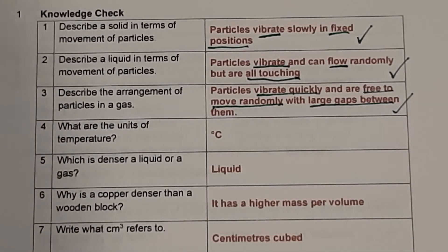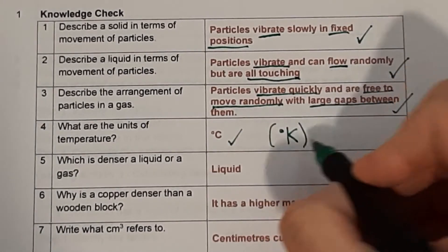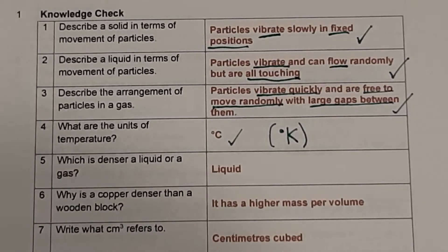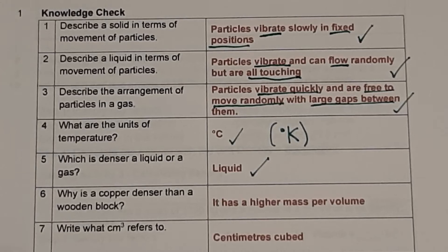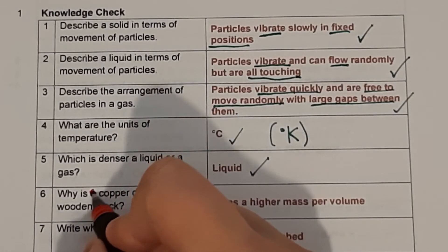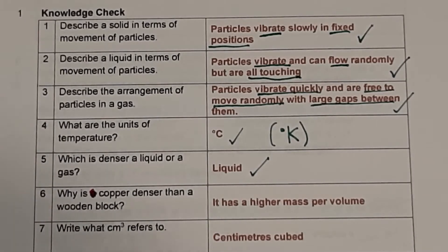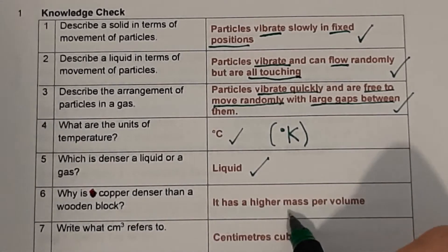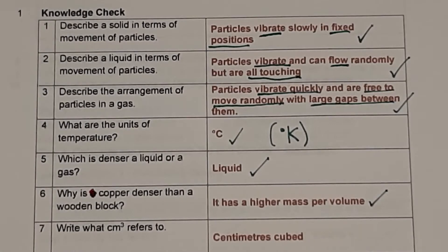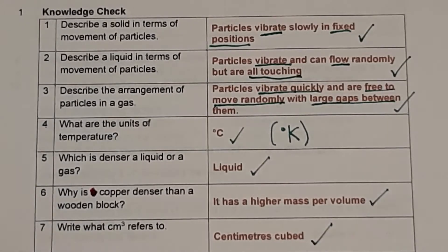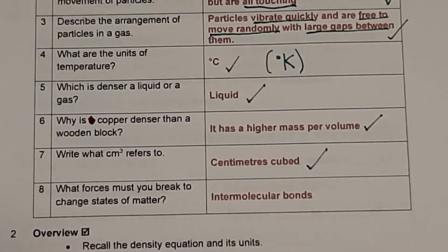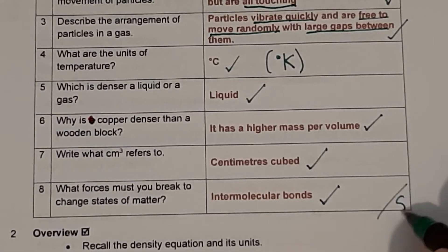Question four: what are the units of temperature? That's degrees Celsius — sometimes degrees Kelvin, but degrees Celsius is the preferred option for this module. Question five: which is denser, a liquid or a gas? Liquids are denser than gases, but solids are denser than both. Question six: why is copper denser than a wooden block? Because it has a higher mass per volume. Question seven: write what cm³ refers to — centimetres cubed. Question eight: what forces must you break to change states of matter? Intermolecular bonds. Give yourself a mark out of eight.